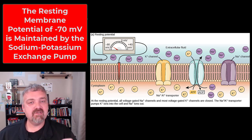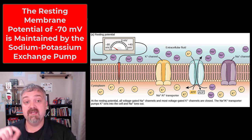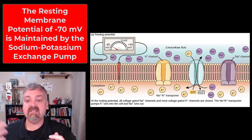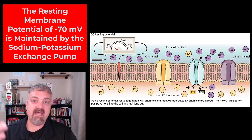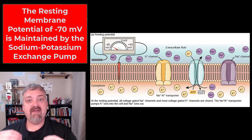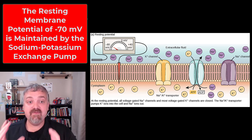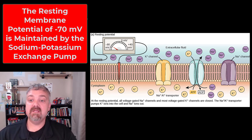We are going to start with what is called the resting potential, or the resting membrane potential, and you will be asked to know these voltage numbers. The resting membrane potential of a typical neuron is negative 70 millivolts. We have leakage channels where, because of diffusion, sodium will slowly diffuse and leak into cells and potassium will slowly leak out. This is a problem because we have to maintain this resting membrane potential of negative 70 millivolts, and diffusion can kind of mess all that up.